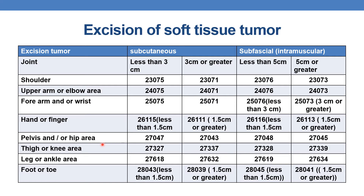Coming to pelvic or hip area. For excision of subcutaneous soft tissue tumor: if less than 3 centimeters, CPT is 27047; if 3 centimeters or greater, it is 27043. For subfascial or intramuscular tumor: if less than 5 centimeters, CPT is 27048; if 5 centimeters or greater, it is 27045.